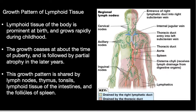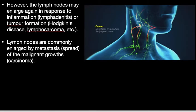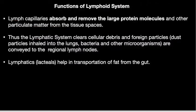The thymus, tonsils, lymphoid tissues of the intestine, and the follicles of the spleen share this pattern. However, lymph nodes may enlarge again in response to inflammation — that is lymphadenitis — or tumor formation like in Hodgkin's disease, lymphosarcoma, etc. Lymph nodes can also be commonly enlarged by metastasis or the spread of cancer growths or carcinomas.